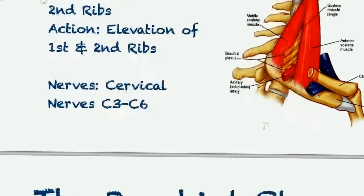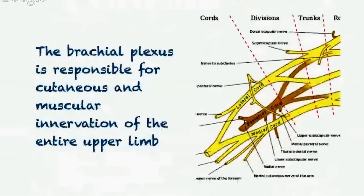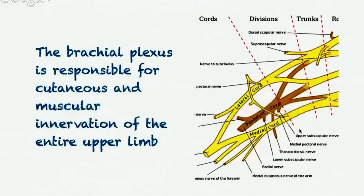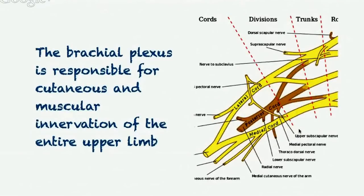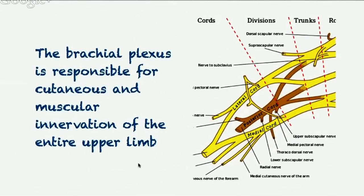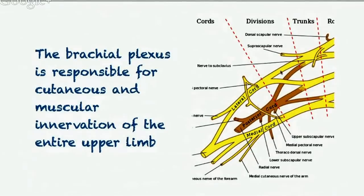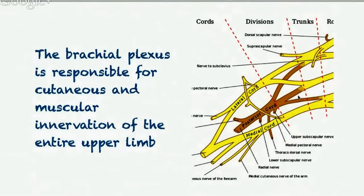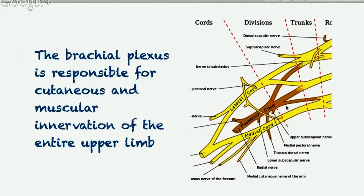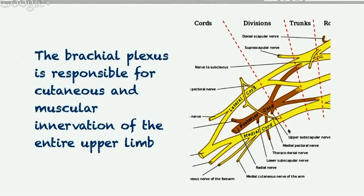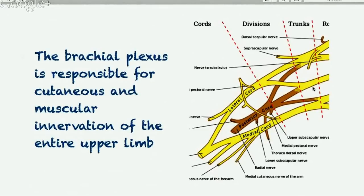The brachial plexus is responsible for the cutaneous and muscular innervation of the entire upper limb, with the only exception being the trapezius. Depending on the location of the impingement, the symptoms the client experiences will vary. As the brachial plexus passes between the scalenes, it is a complete bundle — all the trunks wrapped together. It's only when it passes through and divides into divisions and cords that we can identify more specific conditions. As an example, thoracic outlet syndrome is quite regularly mistaken for carpal tunnel.